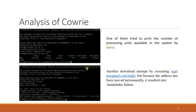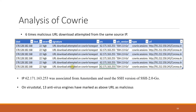Two more play log utility screenshots of recorded events: one attacker tried to print the number of available processing units in the system using the nproc command. Another user attempted a download using the wget command but resulted in a handshake failure because the website or URL was permanently moved. There was also a user who tried to use the same source IP, the same SSH version, and downloaded the same URL.